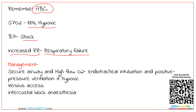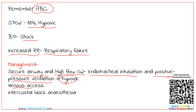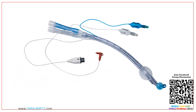In practical situations, high-flow oxygen, venous access, and analgesia are all given simultaneously. But for examination purposes, we need to know the steps. The first step should be to secure the airway and provide high-flow oxygen. Endotracheal intubation and positive pressure ventilation are given if the patient is hypoxic. Venous access and intercostal block anesthesia can also be given.